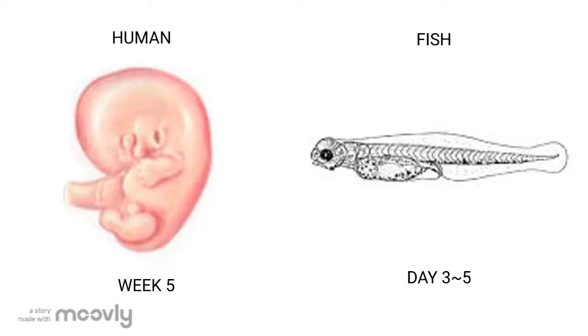Both these embryos begin with gill slits, but as they develop further, for fish species they become gills, and in humans they disappear before birth, just like what happened in week 5.